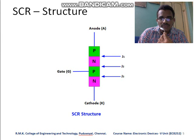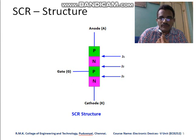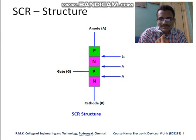Now we look at the SCR structure. The SCR structure is a four-layer device: P-type, N-type, P-type, and N-type — four layers of semiconductor materials. It has three junctions: P-to-N is the first junction, N-to-P is the second junction, and P-to-N is the third junction. So it is a four-layer, three-junction device.